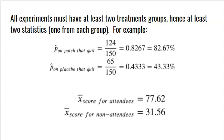Here's another example. Some teachers attend a professional development to help increase their math knowledge, and the other group does not. At the end, after a week, everybody takes a math test. The average score for people who attended the professional development was 77.62, and the average score for those who did not was 31.56. That's a big difference, but is it a statistically significant difference? It's not just as simple as saying 77 is bigger than 31 — go to the conference and you'll get smarter. We actually have to determine what statistically significant means and how to prove it.